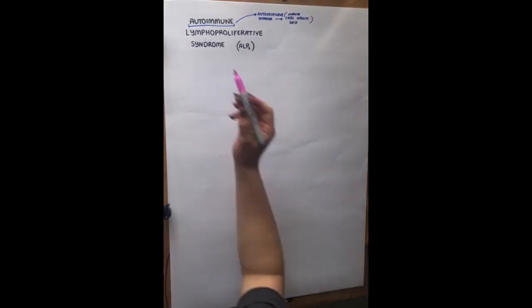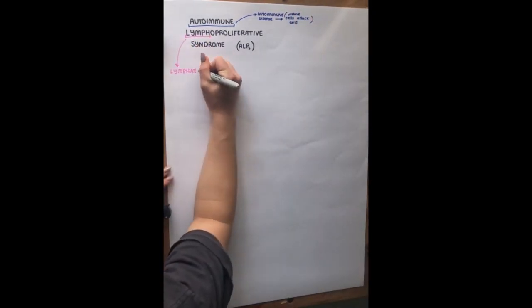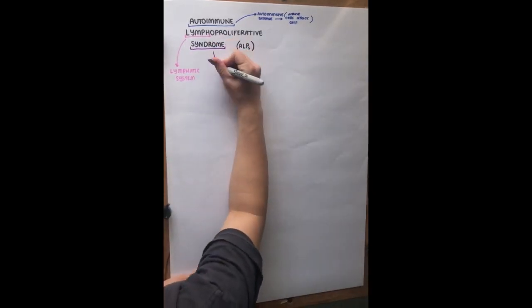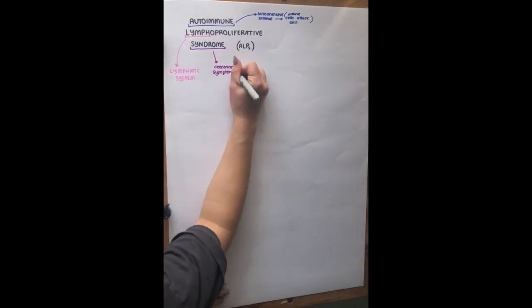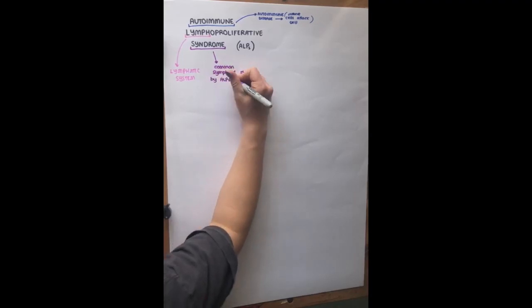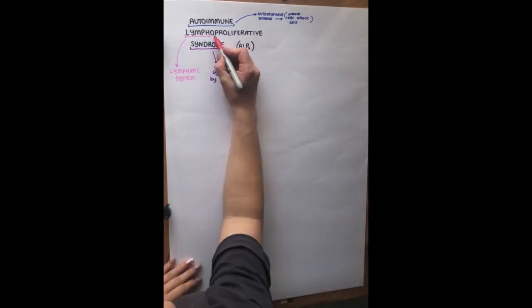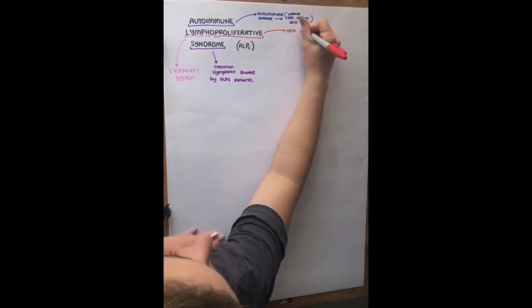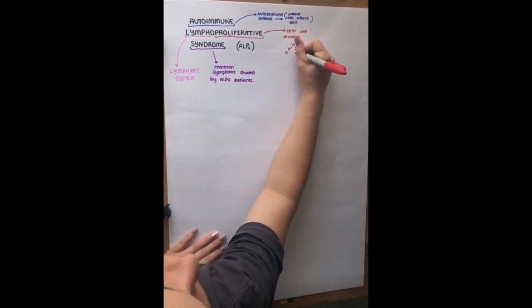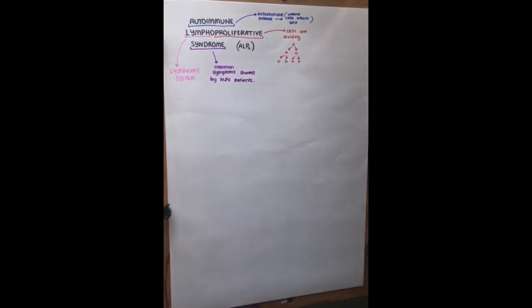Then lymph generally means it's a part of the lymphatic system, which I will go over. Syndrome is related to the common symptoms shared by all ALPS patients or most ALPS patients. And proliferative means that cells are dividing or they're growing in a way, so accumulating.